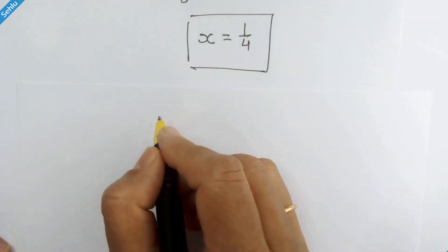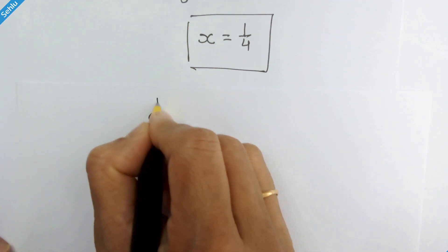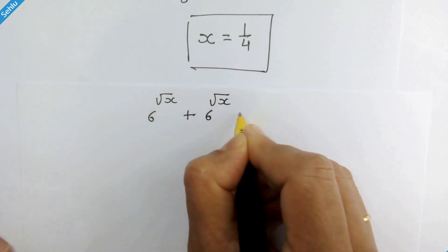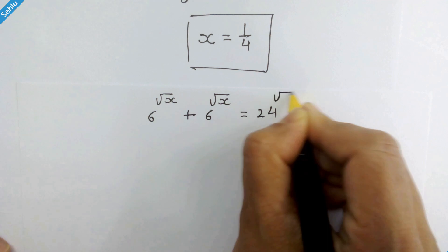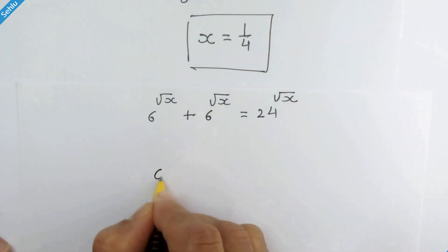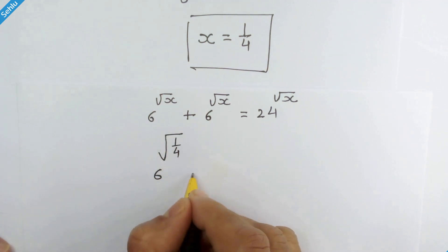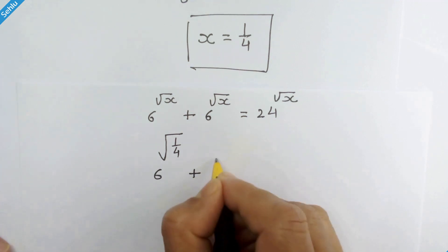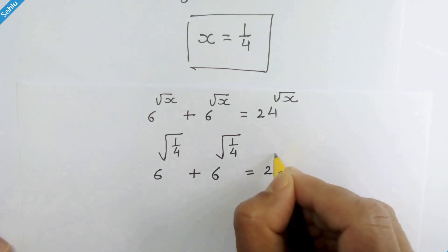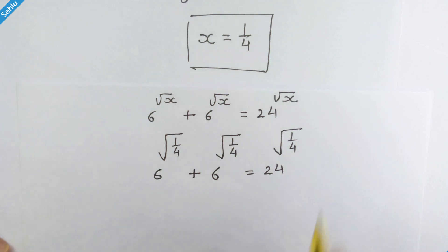Let's check our answer. The question is: 6 raised to square root of x plus 6 raised to square root of x is equal to 24 raised to square root of x. Putting x equal to 1 upon 4, we get 6 raised to square root of 1 upon 4 plus 6 raised to square root of 1 upon 4 is equal to 24 raised to square root of 1 upon 4. Square root of 1 upon 4 is 1 upon 2.